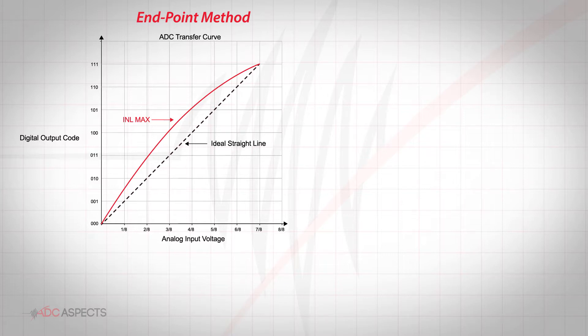For the endpoint method, the deviation is measured from the straight line that runs through the origin to the full scale point. This is the most useful INL measurement for precision measurements as it provides the worst case INL, which can be used for error budget calculations.